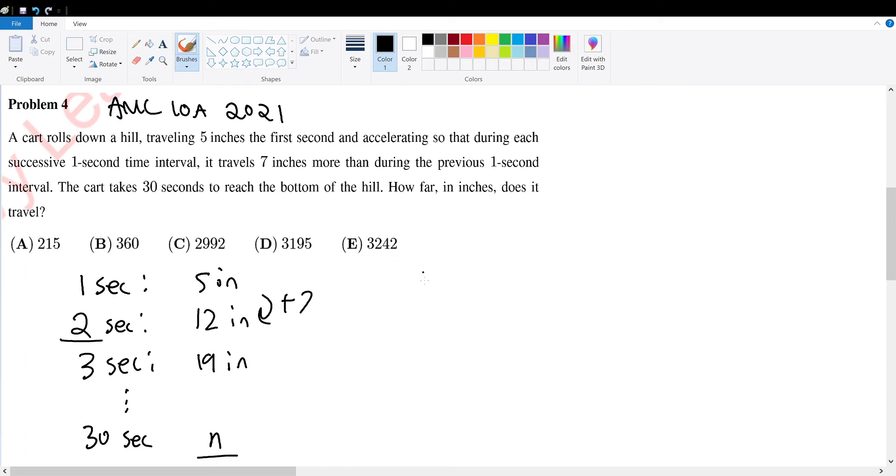And to find this n, we know a_n is equal to a_1 plus n minus 1 times d. So a_30 will be the same thing as the first number 5 plus the term number, which is 30 minus 1, times the difference of 7. So this will be 5 plus 29 times 7. This becomes 203, so this is equal to 208. So the 30th number is equal to 208.